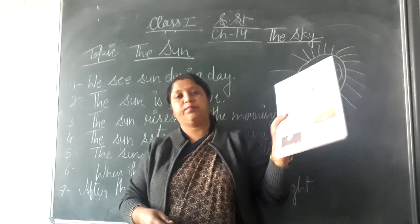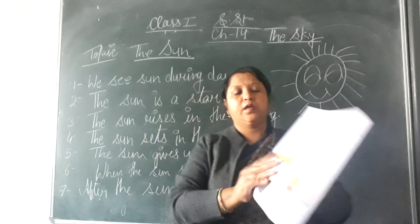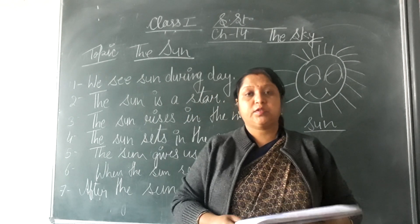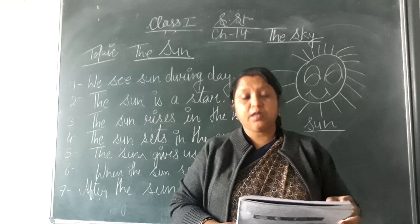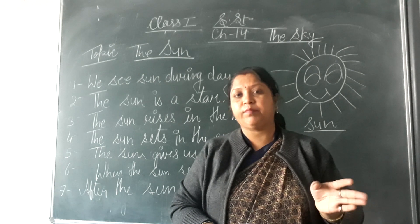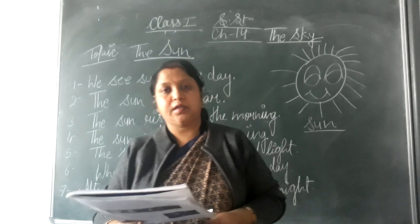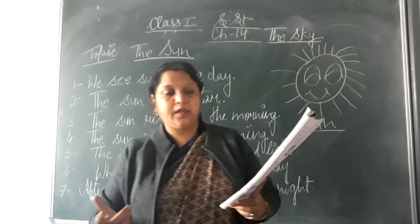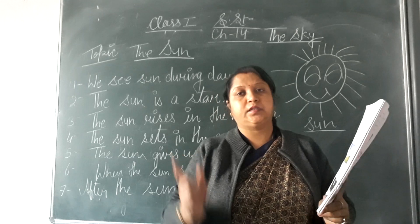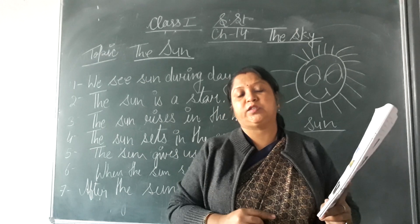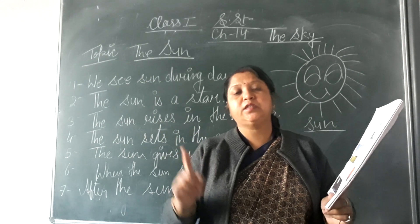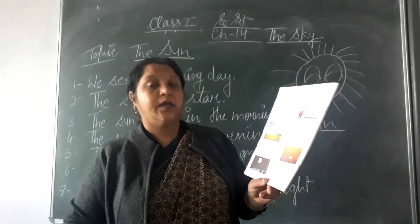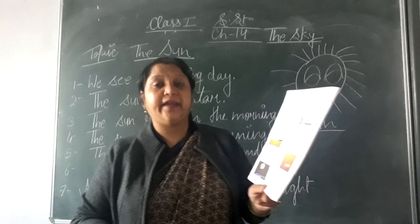Now open your book page number 58 and put your index finger. Today our topic is the sun. We see the sun in the sky. All of you speak along with me: we see the sun in the sky. The sun rises in the morning. It rises in the east. East is a direction. There are four main directions: east, west, north and south. The sun shines bright. It gives us light and heat.